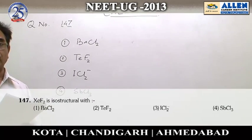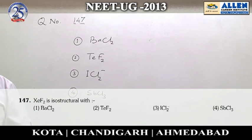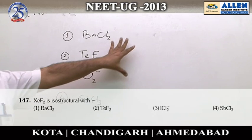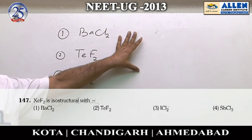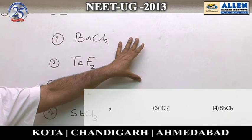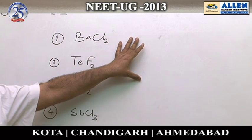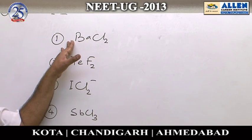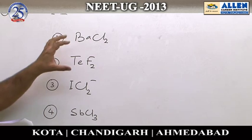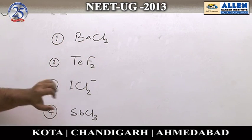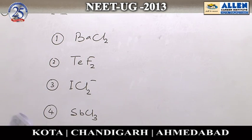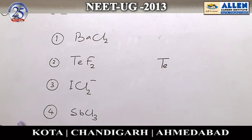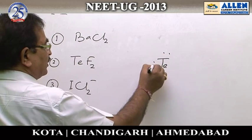Question number 147: XeF2 is isostructural with which molecule? Molecules having the same number of lone pairs and bond pairs surrounding the central atom are isostructural. In this question, the first option is BaCl2 — it is an ionic compound, so hybridization is absent in this molecule.